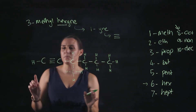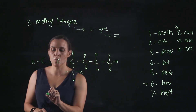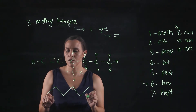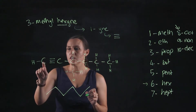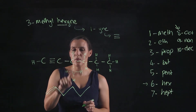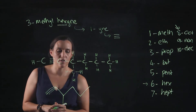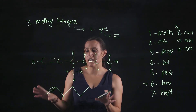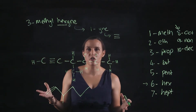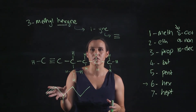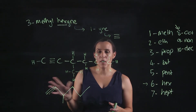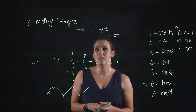Now let's convert the full structural into the line diagram. I've got one, two, three, four, five, six carbons. Between carbon one and two there's a triple bond — that's how I draw it — and then on carbon three I draw the methyl as a line going down. Line diagrams are really easy to draw, and you don't have to add all the hydrogens. As you progress further in chemistry you'll probably use line diagrams exclusively because of how easy they are to draw.